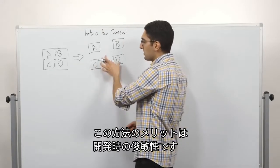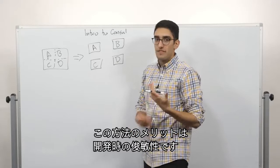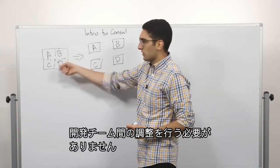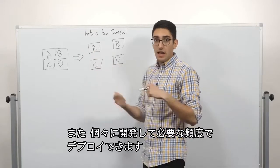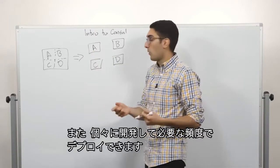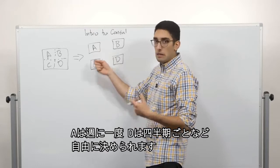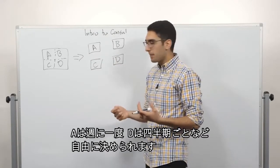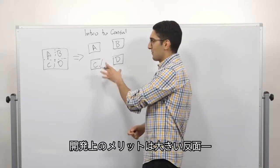we can just patch and redeploy A without having to coordinate across these different systems. So what this really buys us is a set of development agility. We don't need to coordinate our development efforts across many different groups. We can develop independently and then deploy at whatever cadence we want. So A might want to deploy on a weekly basis while D might want to deploy on a quarterly basis.